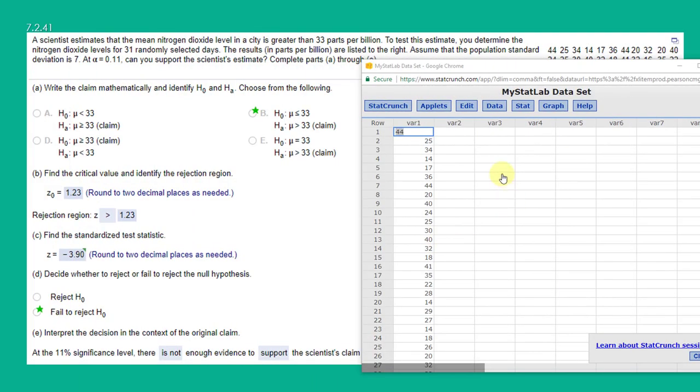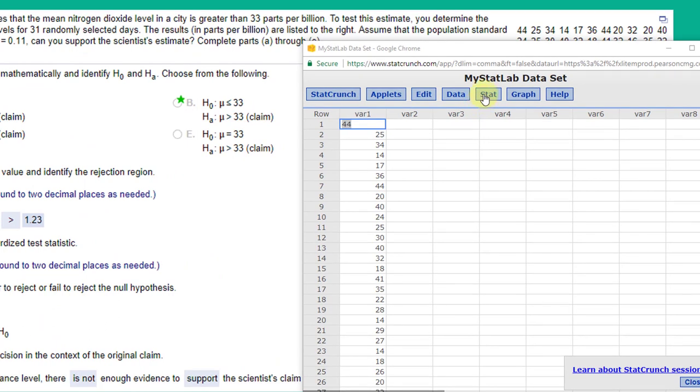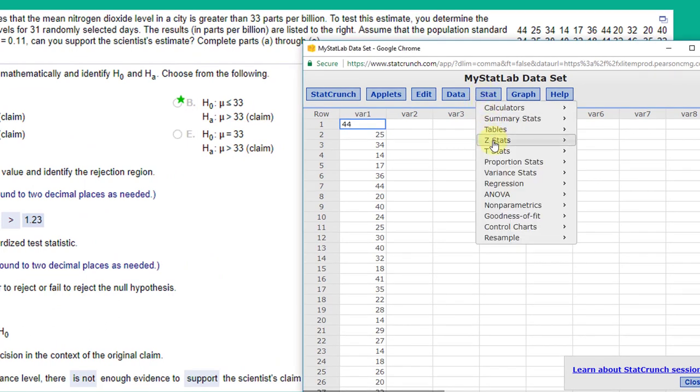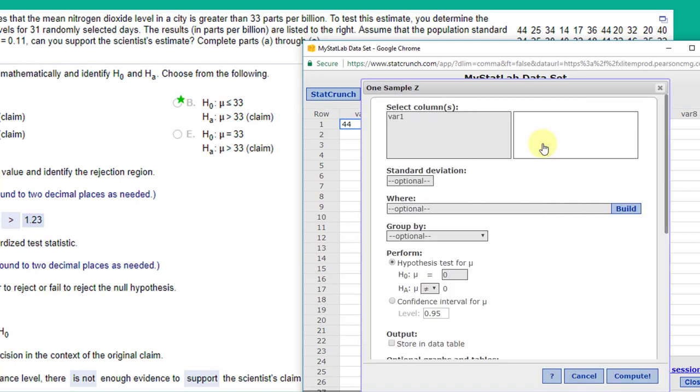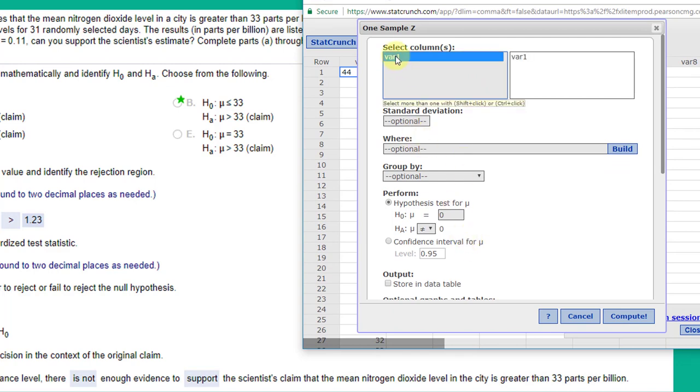Okay, we have the data in StatCrunch in the column labeled VAR1. As we do most often, we're going to start with Stat, and this time it's a ZStat. We have one sample, but this time instead of summary, we have the data. So we click on With Data. We start out here. I'm going to drag this up a little bit there. We have to select the column. Something a lot of students miss when they use wrong data is they forget to put in the population standard deviation, which we were told was 7.